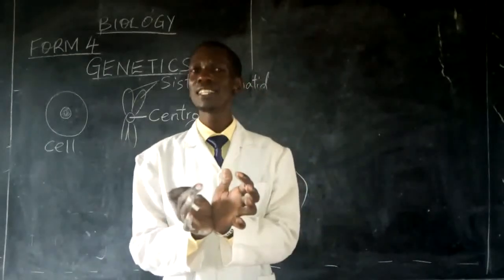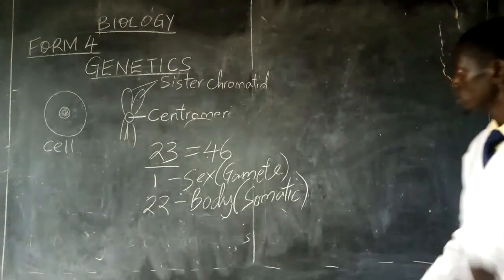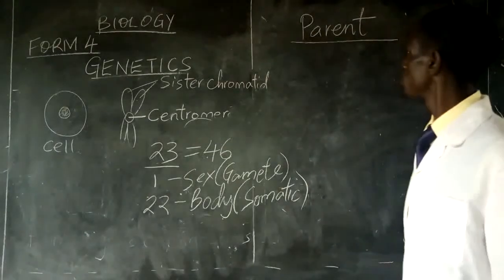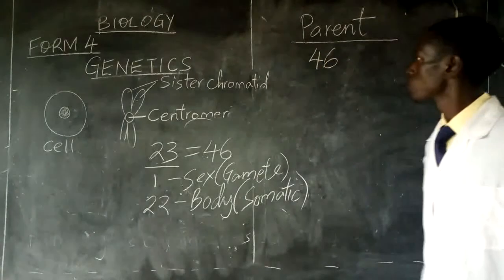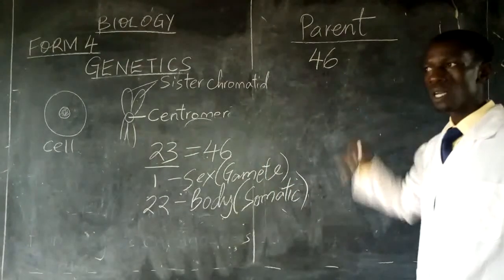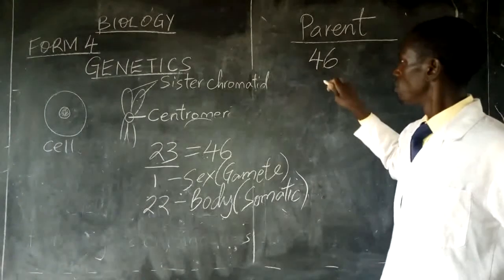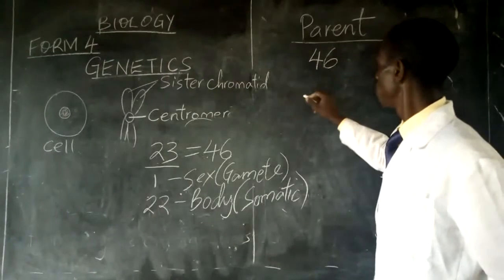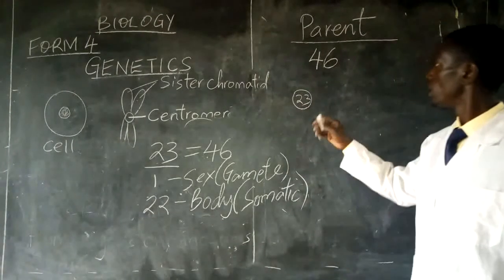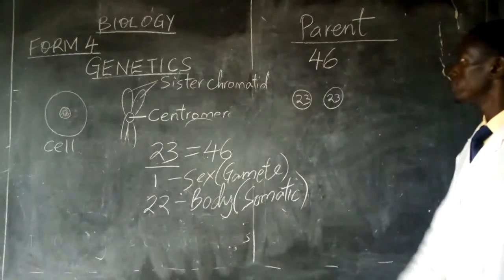The other parent gives out half as well, so that the resulting zygote will have the required number of chromosomes. For example, in human beings, each parent has 46 chromosomes — 44 which determine general body characteristics, and 2 which determine the sex of the individual. During gamete formation, a division process results in the production of gametes containing 23 chromosomes each.